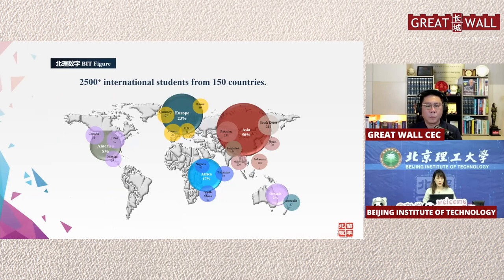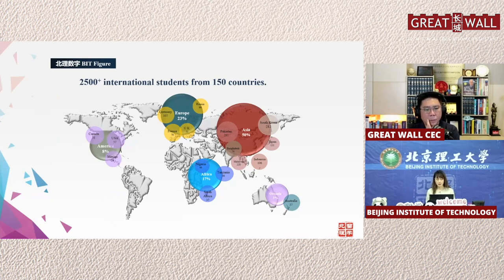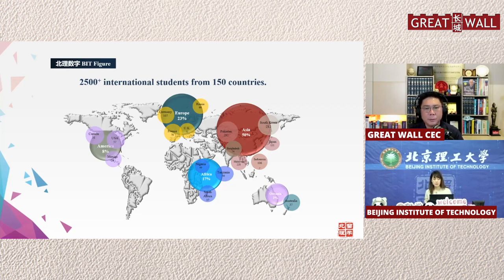We have more than 2,500 international students from 115 countries. About half of our international students are from Asian countries, for example Pakistan, Indonesia, Malaysia, Bangladesh, and Japan. Around one-fourth of our international students come from European countries such as Germany, France, and the UK. For Indonesian students specifically, we currently have more than 100 students across undergraduate, master, and PhD programs.